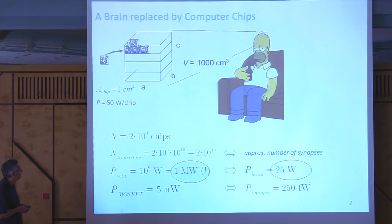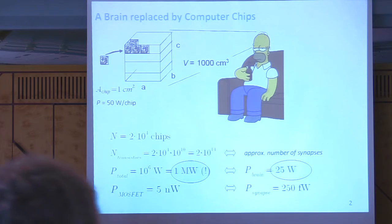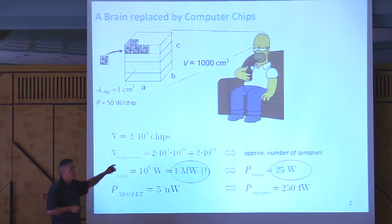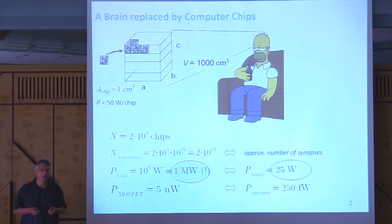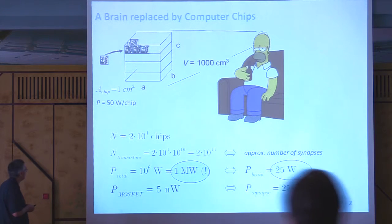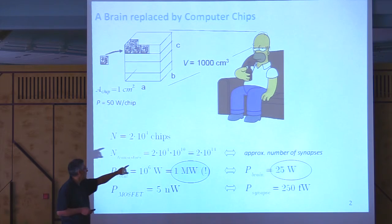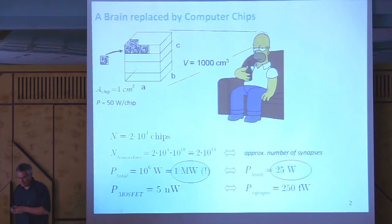The message is the same, like Philip Wong said. You have a brain, that one from Homer Simpson in this case. We had a small exercise at the beginning of our lectures for neuromorphic engineering, simply by putting processor chips, 50 watt per chip, in the brain of a cube of 1,000 cubic centimeter. When you claim you have around 10 billion devices, you come up with 20,000 chips in the brain from Homer Simpson.